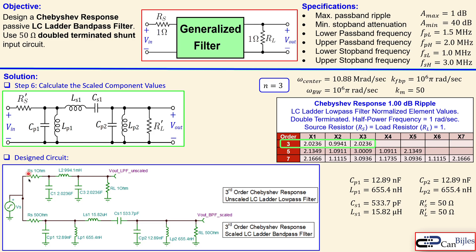This is the prototype low-pass filter, which is unscaled and normalized. This is our scaled bandpass filter transformed from that normalized prototype low-pass filter. We will use this circuit and verify that it meets the specifications.